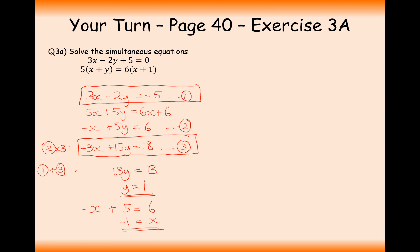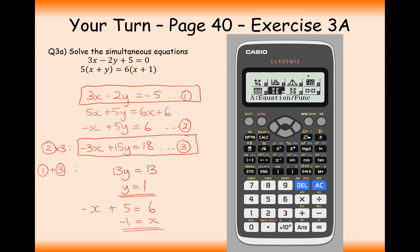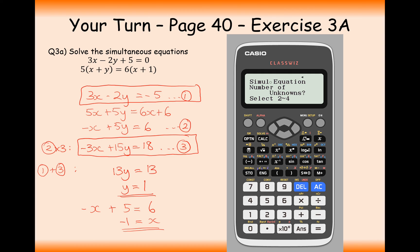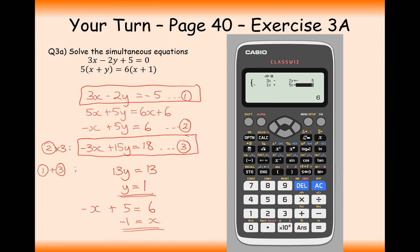Just to also show you that you can do this question on your calculator. If you select the menu button and scroll down to equation slash function option A and click on the simultaneous equations mode, then the number of unknowns we need is 2 because we've got an x and a y.